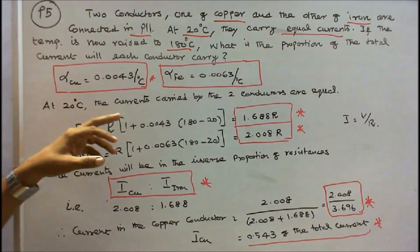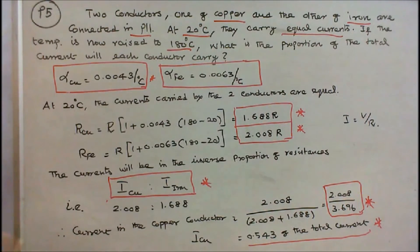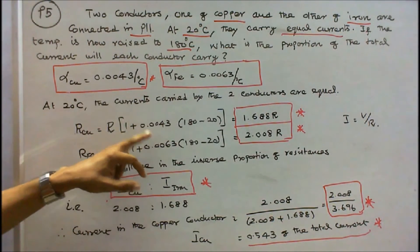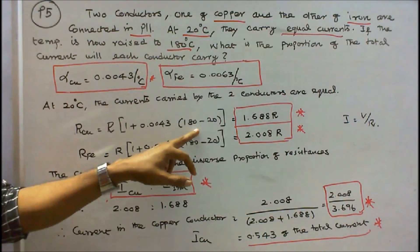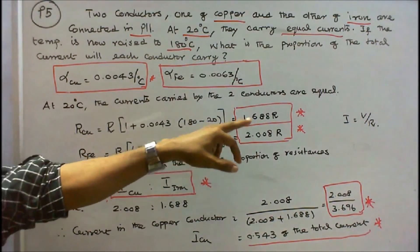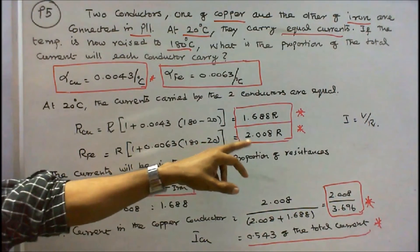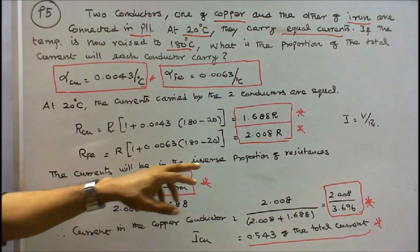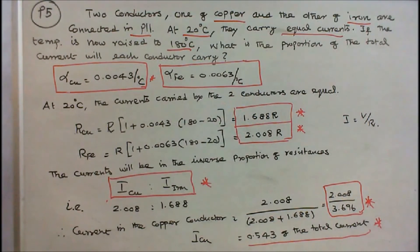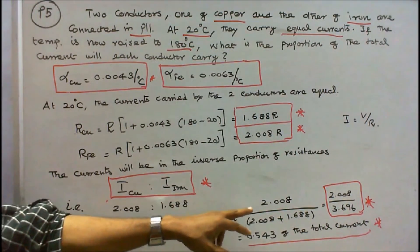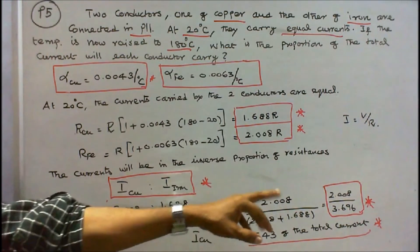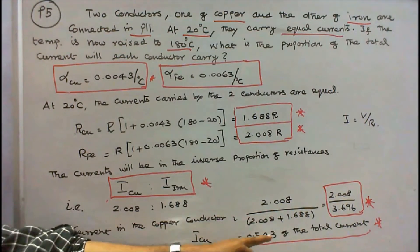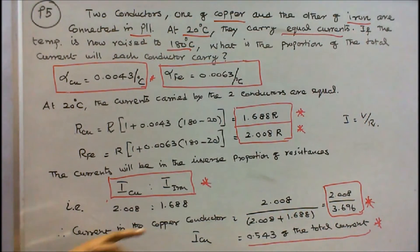At 20 degree centigrade the currents carried by the two conductors are equal, so their resistances are equal — call it R. Resistance of copper at 180°C equals R into 1 plus 0.0043 into (180 minus 20), i.e., into 160, giving 1.688 R. Similarly, iron resistance equals 2.008 R. Since currents are in inverse proportion of resistance (I equals V by R), the current in the copper conductor equals 2.008 divided by (2.008 plus 1.688), which is 2.008 divided by 3.696, equal to 0.543 of the total current.